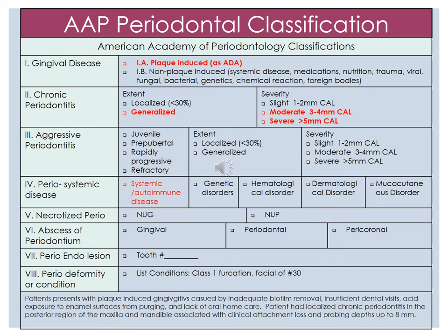For Kim's AAP periodontal classification, she does have plaque-induced gingivitis. She also presents with generalized chronic periodontitis, which is moderate with 3 to 4 millimeter clinical attachment levels, and some areas of severe with a 5 millimeter clinical attachment level. Her peri-systemic disease is an immune disease. For the peri-deformity, she has a class 1 furcation on the facial of number 30. Overall, the patient presents with plaque-induced gingivitis caused by inadequate biofilm removal, insufficient dental visits, acid exposure to the enamel surfaces from purging, and a lack of oral home care. The patient has localized chronic periodontitis in the posterior region of the maxilla and mandible, associated with clinical attachment loss and probing depths up to 8 millimeters.